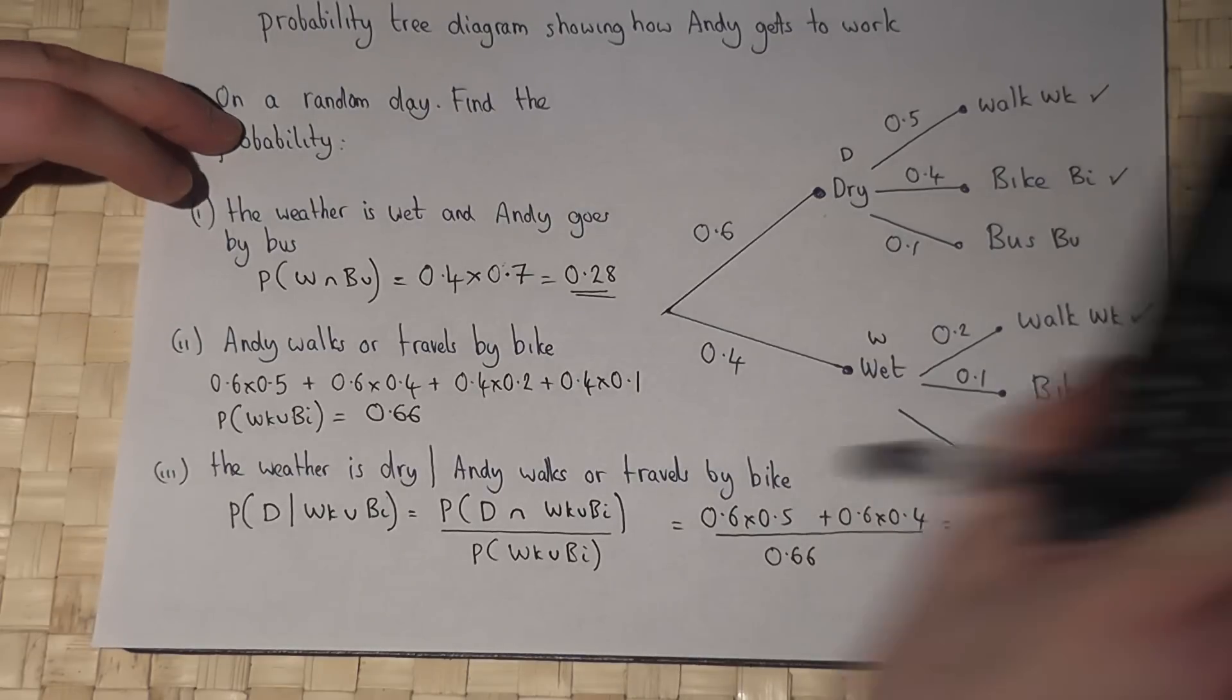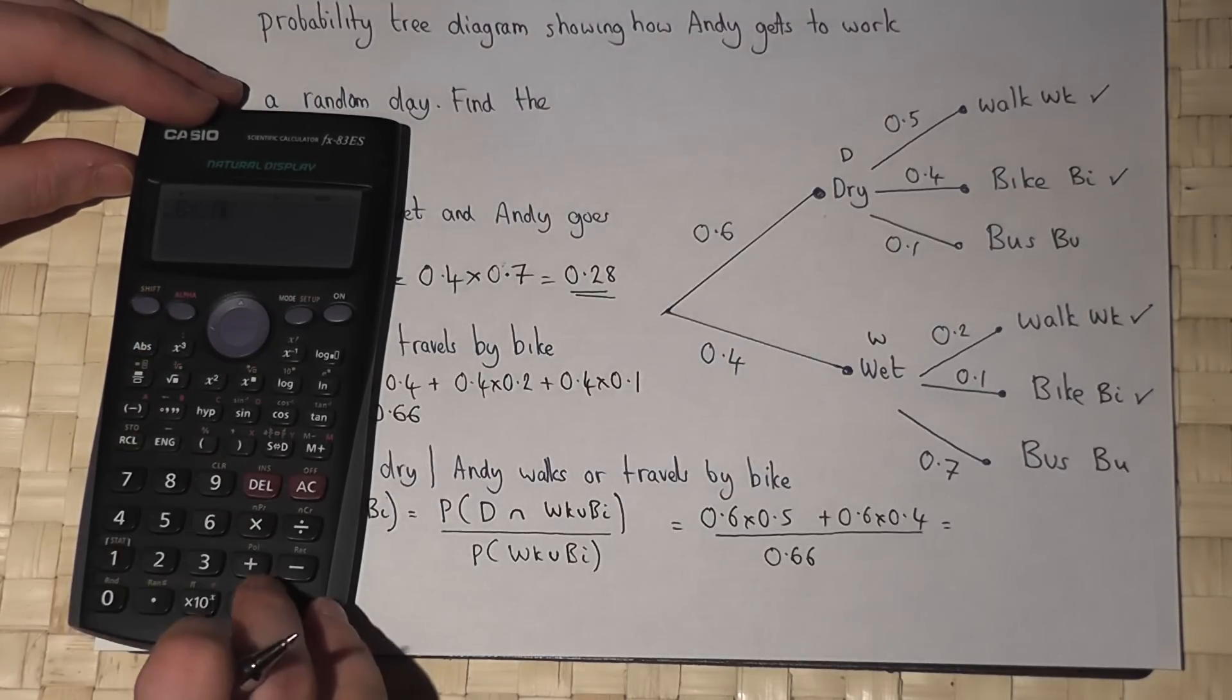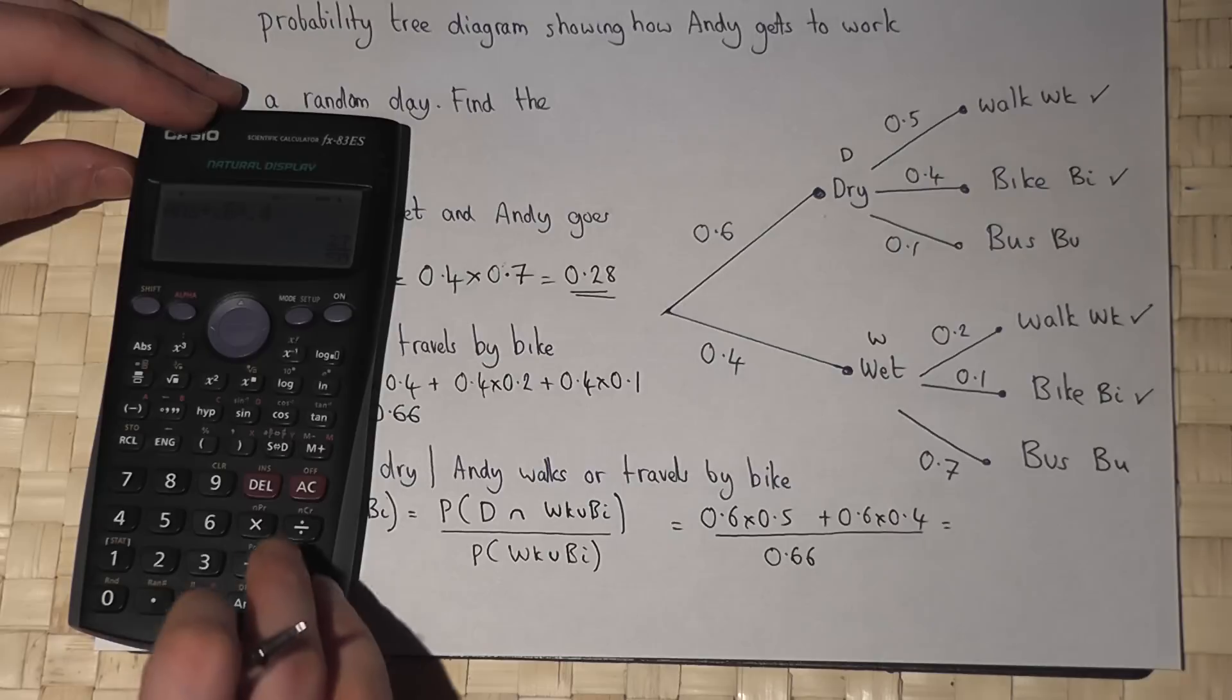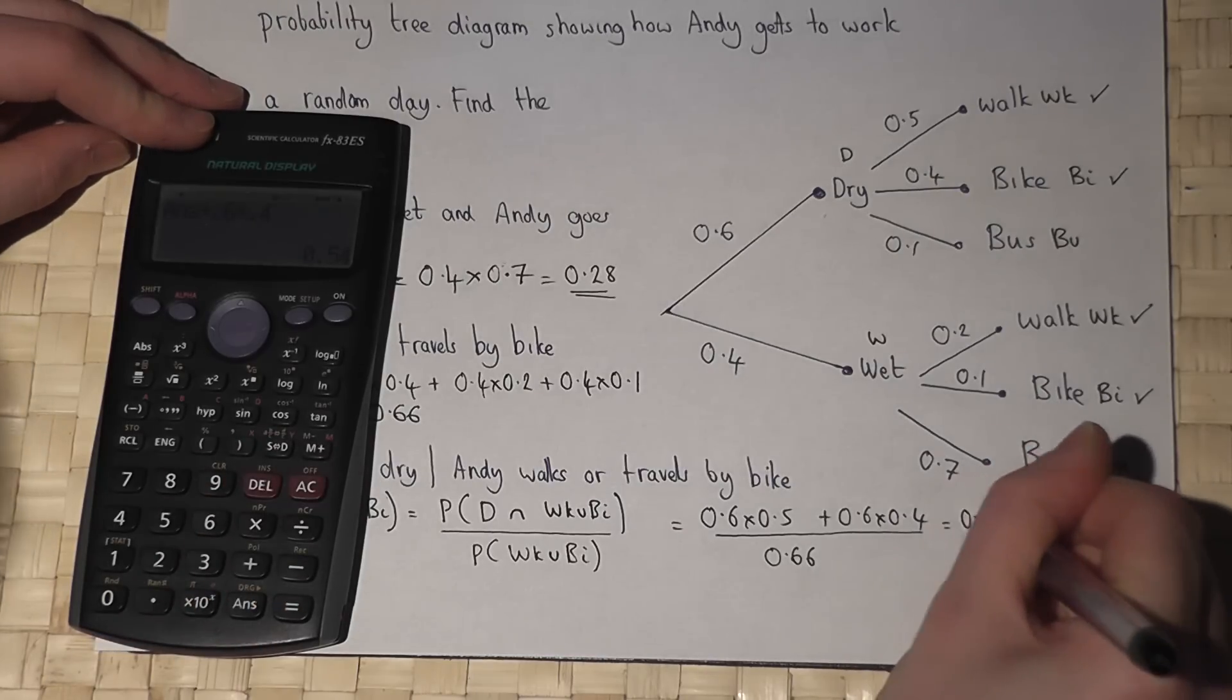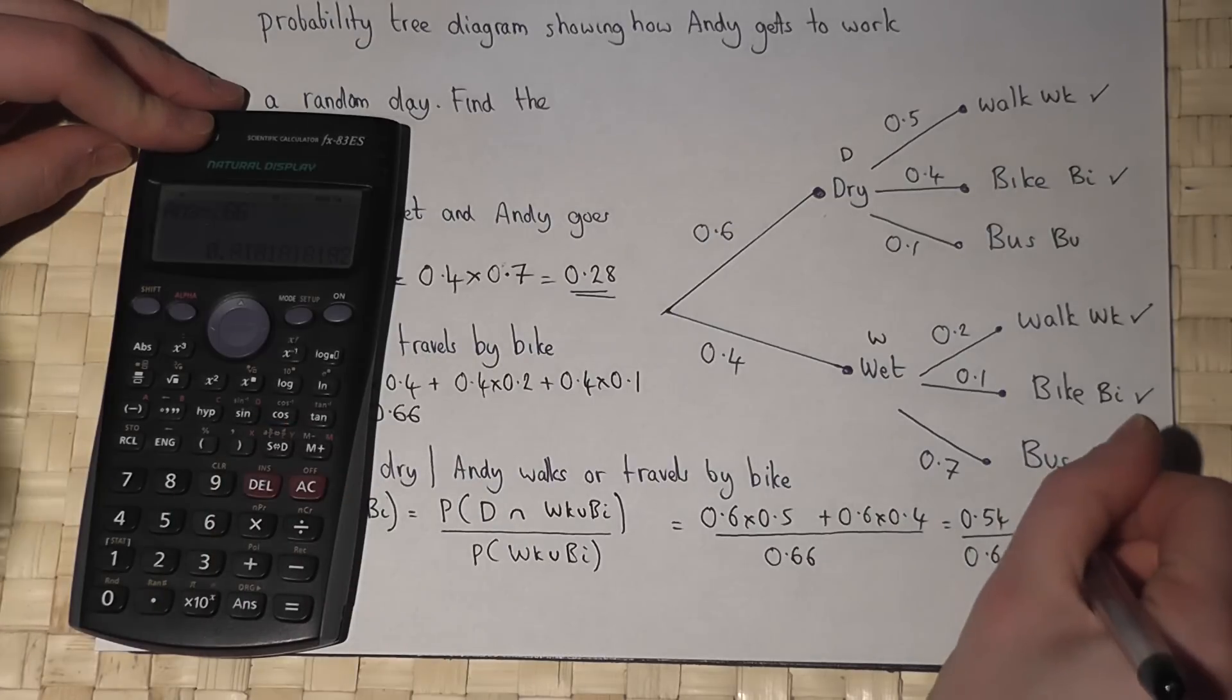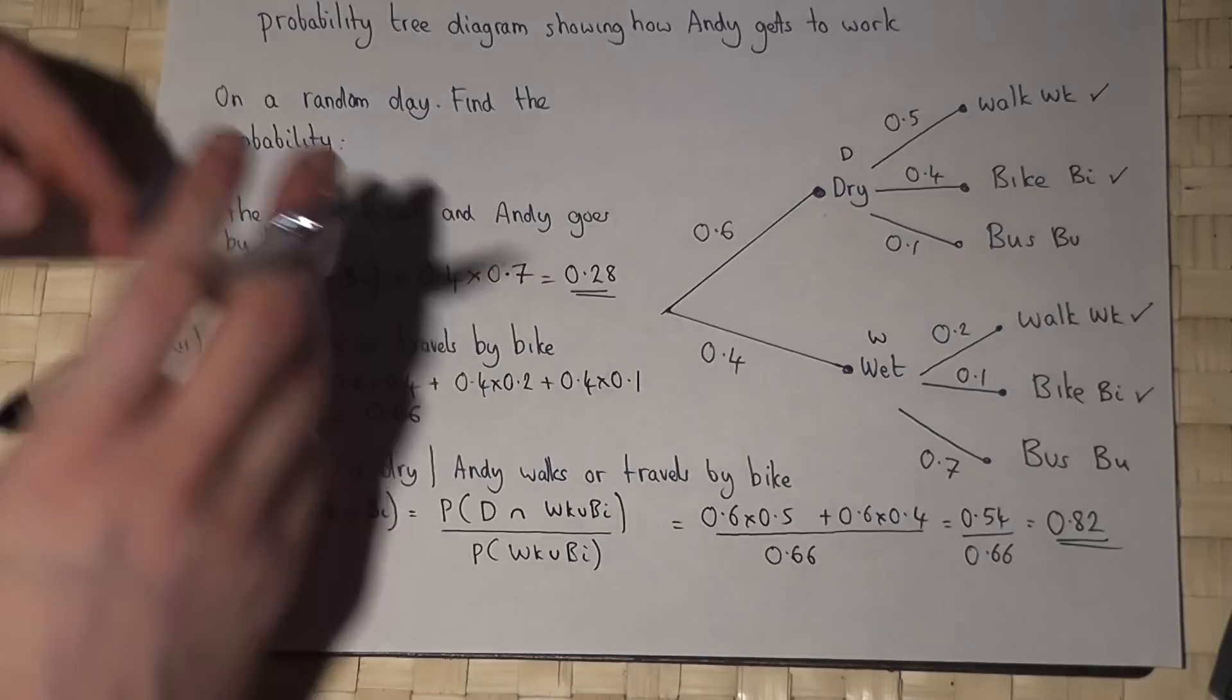So I just enter that into my calculator. So 0.6 times 0.5 plus 0.6 times 0.4 is 0.54. So it's 0.54 over 0.66 which is 0.82 to 2 decimal places.